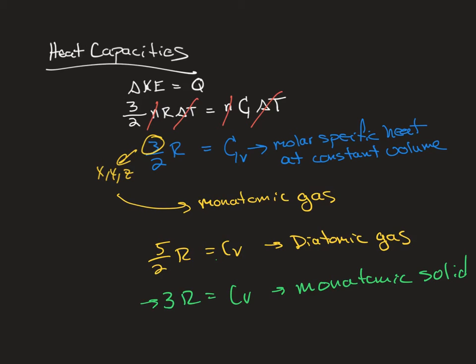Now remember this 3 is really 6 divided by 2. Our relationship here is that the molar specific heat at constant volume is equal to the degrees of freedom—the different ways it can move or get kinetic energy—divided by 2, times the ideal gas constant.